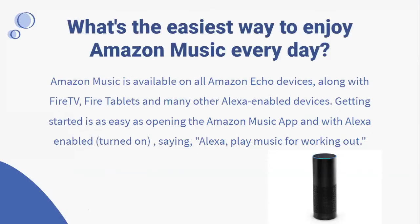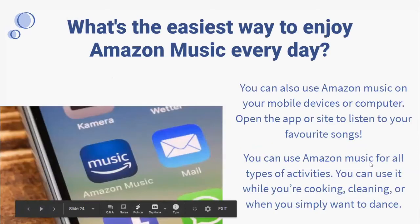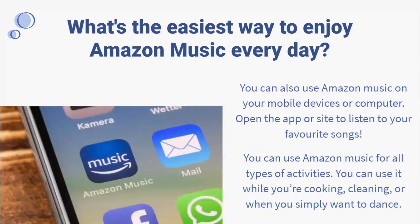What's the easiest way to enjoy Amazon Music every day? Amazon Music is available on all Amazon Echo devices, along with Fire TV, Fire tablets, and many other Alexa-enabled devices. Getting started is as easy as opening the Amazon Music app and saying 'Alexa, play music.' You can also use Amazon Music on your mobile devices or computer — open the app or site to listen to your favorite songs.